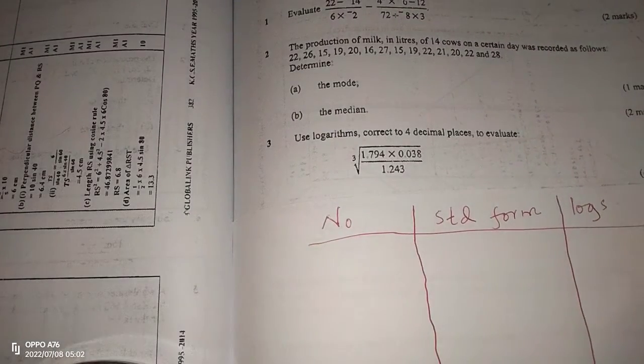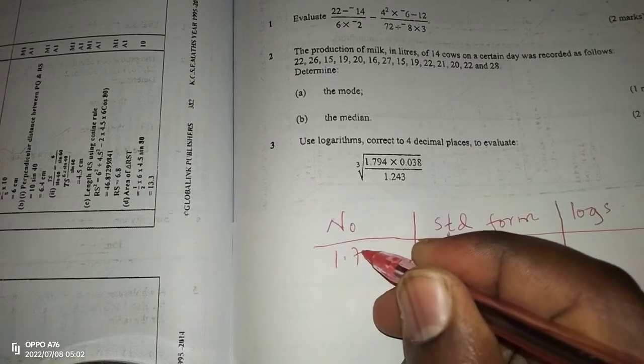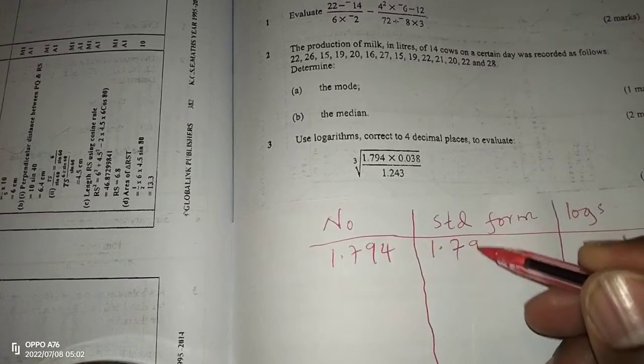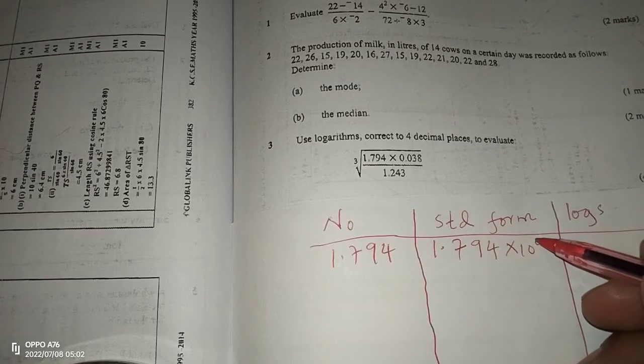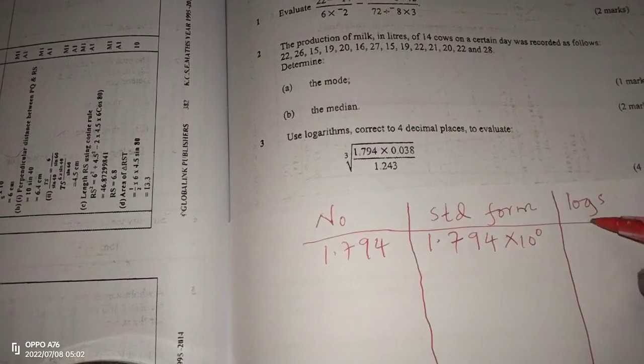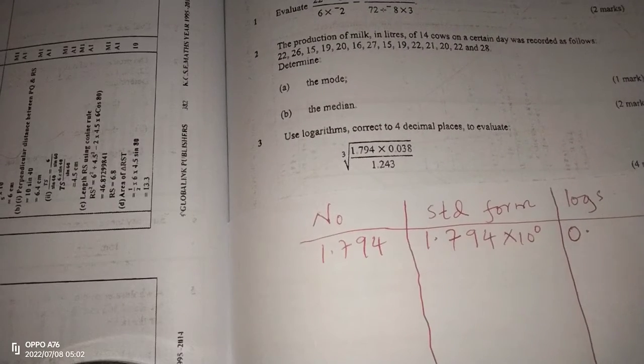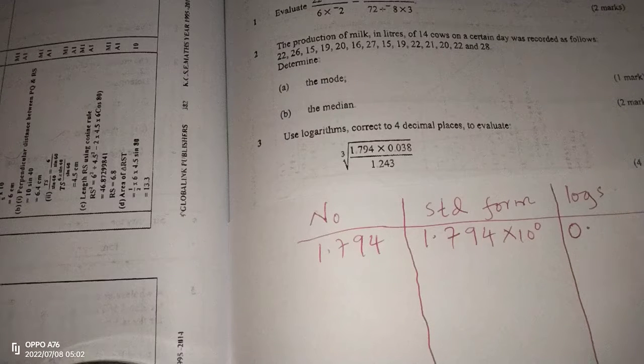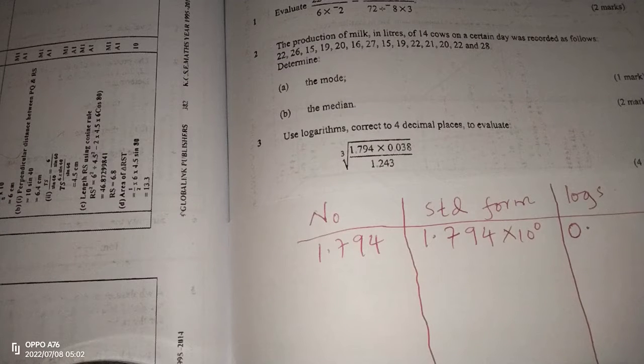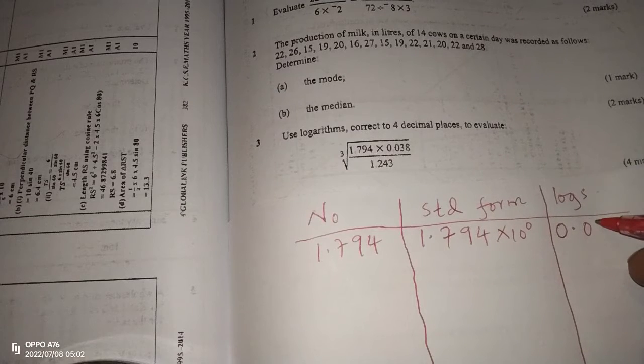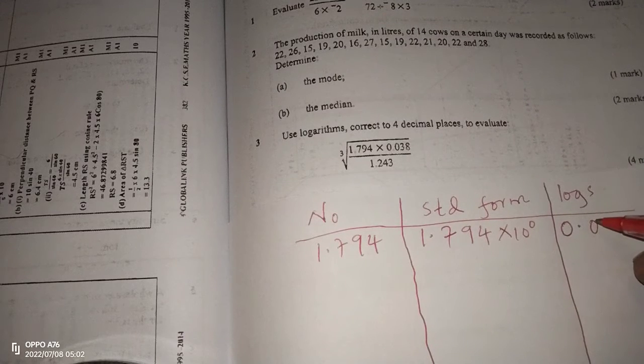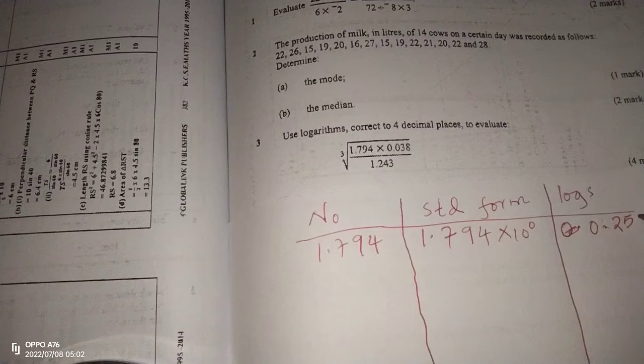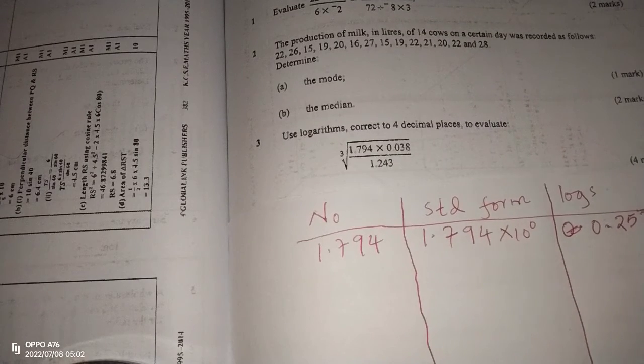Then we start with the first number, which is 1.794. This one in standard form will be 1.794 multiplied by 10 power 0. So which means due to this 0, the logarithm will just be 0 point. Then we use either math tables or the calculator to get the log of 1.794, which is 0.2538.